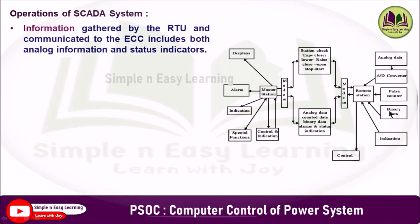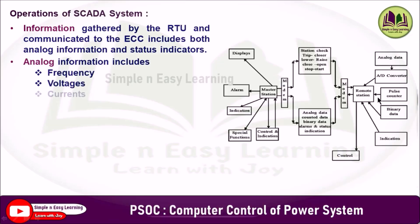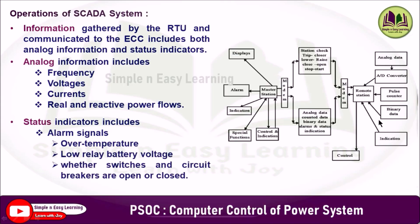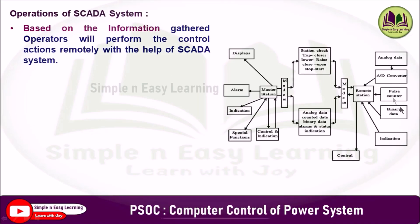Information gathered by the RTU and communicated to the ECC includes both analog information and status indicators. Analog information includes frequency, voltages, currents, and real and reactive power flow. Status indicators include alarm signals such as over-temperature, low relay battery voltage, and whether switches and circuit breakers are open or closed. Based on the information gathered, operators perform control actions remotely with the help of the SCADA system.